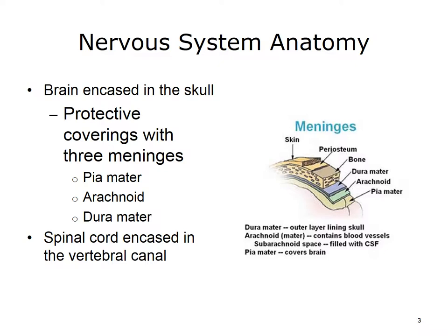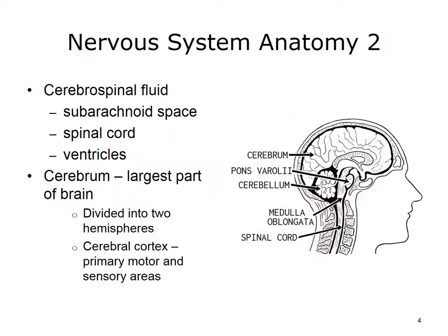The brain and spinal cord receive, store, and process the body's sensory and motor data. They also control consciousness. There is also cerebrospinal fluid in the ventricles of the brain and surrounding the spinal cord.